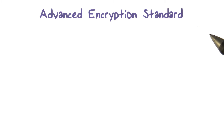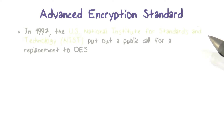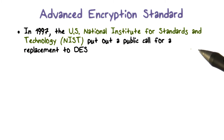Now let's discuss another symmetric encryption algorithm, the Advanced Encryption Standard, or AES. Recall that a major shortcoming of DES is that the key length is only 56 bits, and that is considered to be short. In other words, the key space is relatively small.